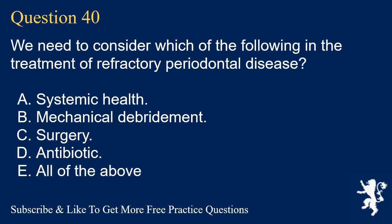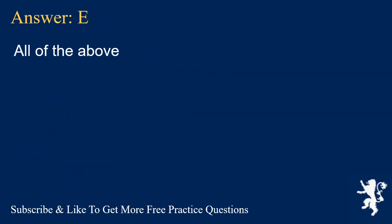Question 40. We need to consider which of the following in the treatment of refractory periodontal disease? A. Systemic health. B. Mechanical debridement. C. Surgery. D. Antibiotic. E. All of the above. Answer: E. All of the above.